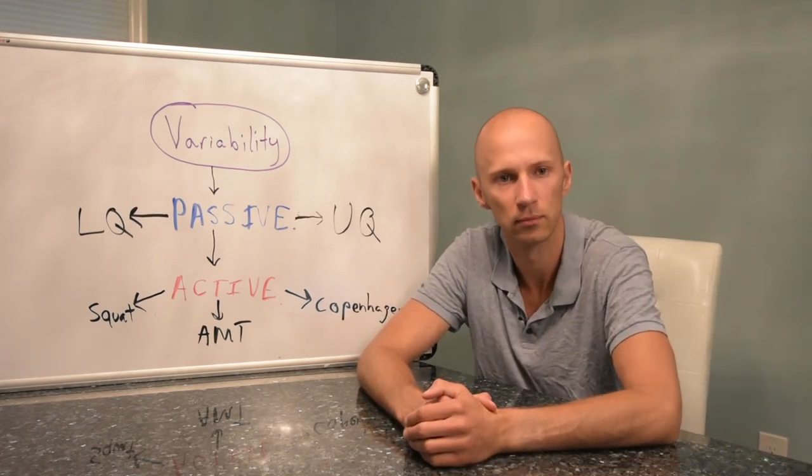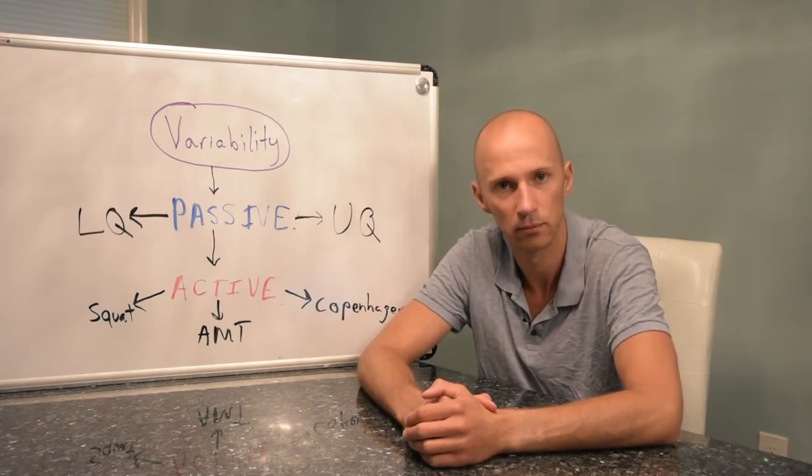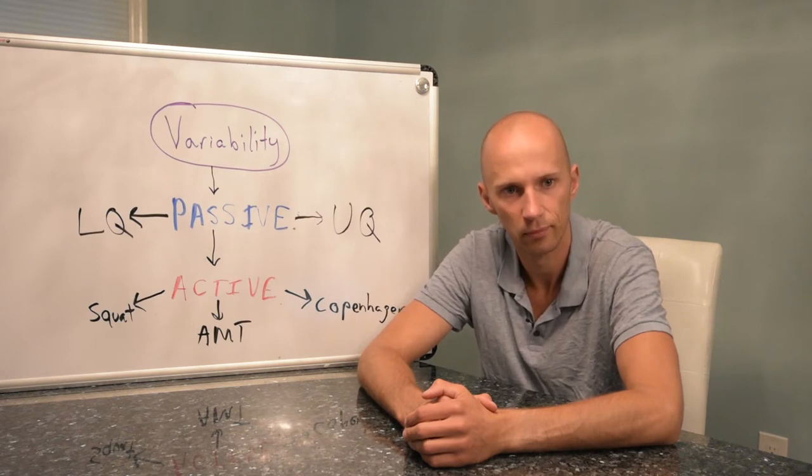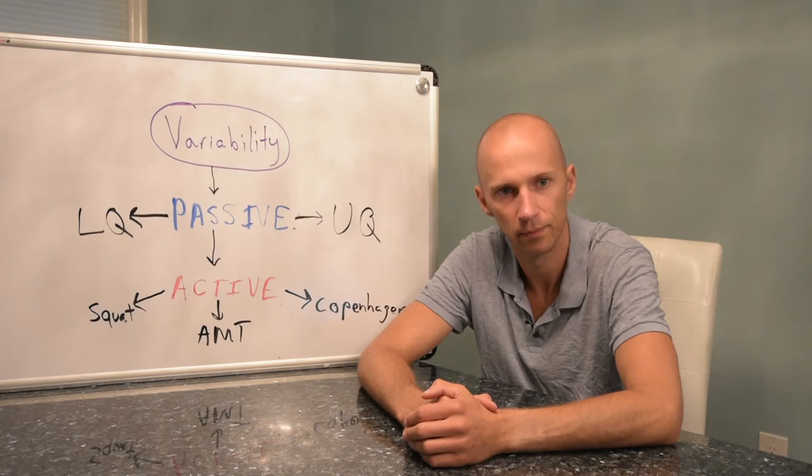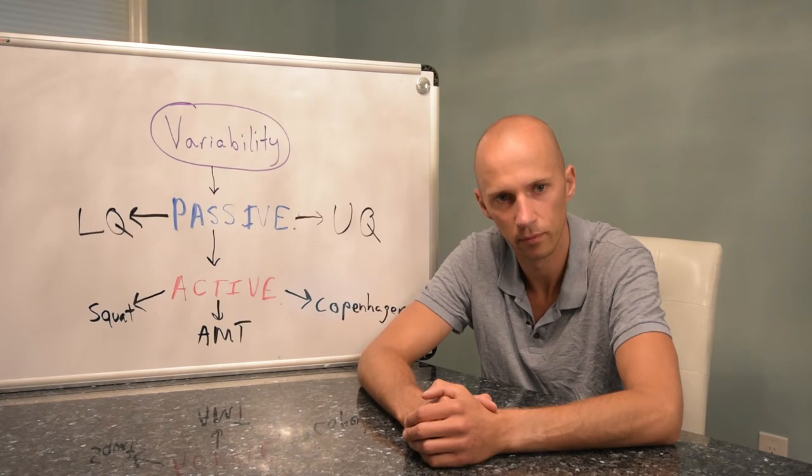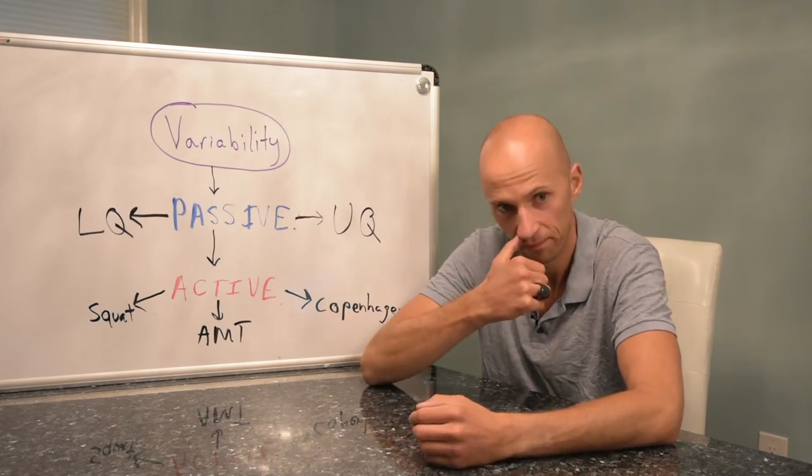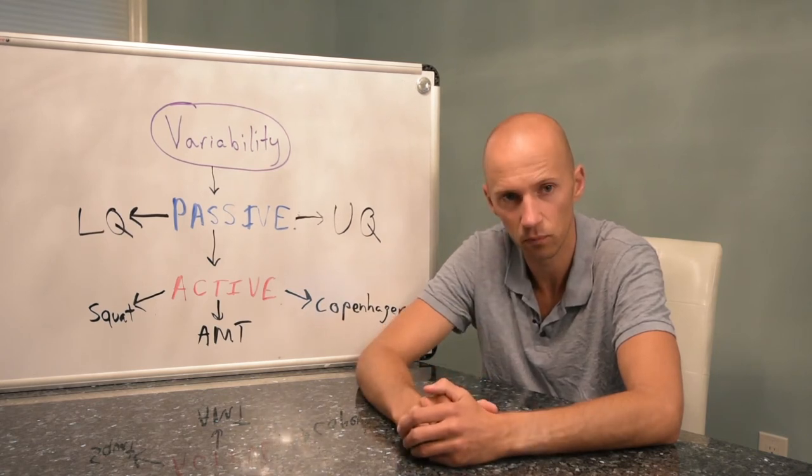So Zach, one thing I'm noticing here is you have your lower quarter and upper quarter stuff for passive tests of variability, but in your active section, like I've seen you do the Copenhagen and I've seen you do the adduction mid stance and the squat, and they look to me like they're very lower quarter dominant tests. How are you testing upper quarter stuff actively?